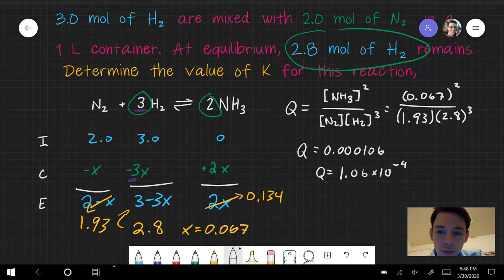And if this is Q at equilibrium, we can call that K. K is equal to Q at equilibrium. So there's our final answer.